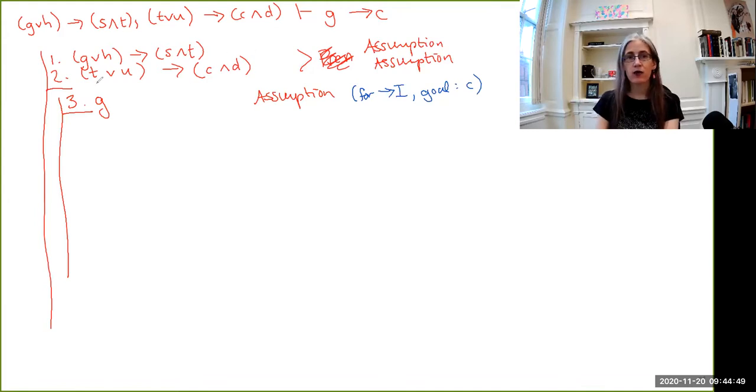Well, we have it in the consequence of the second conditional. Can't really do anything to get there yet because the only rule that would allow us to apply here is the conditional elimination rule, but we would need to have that antecedent, and we don't. So take a look at where we have our assumption. Where else does G occur?